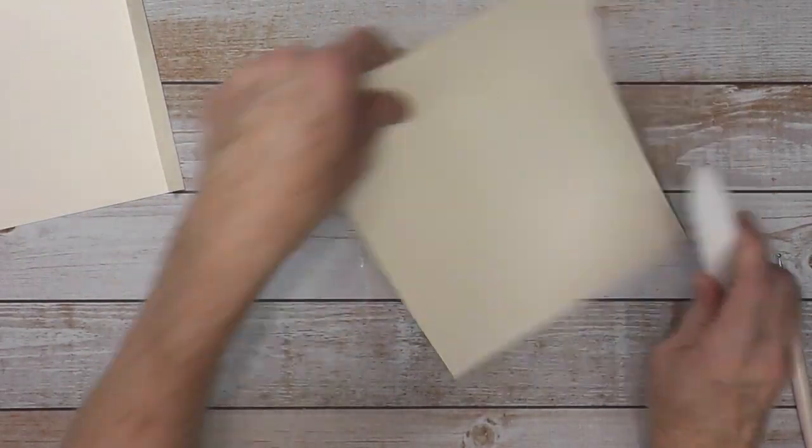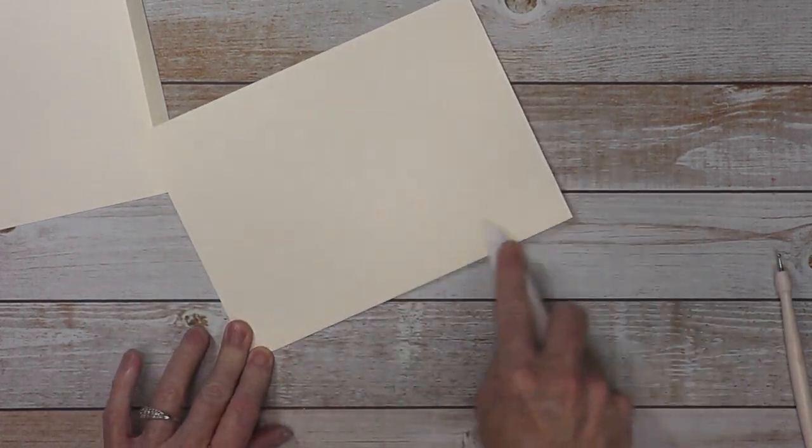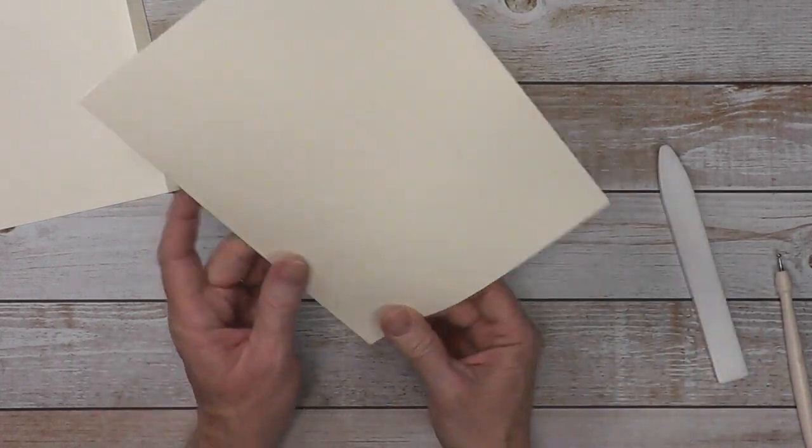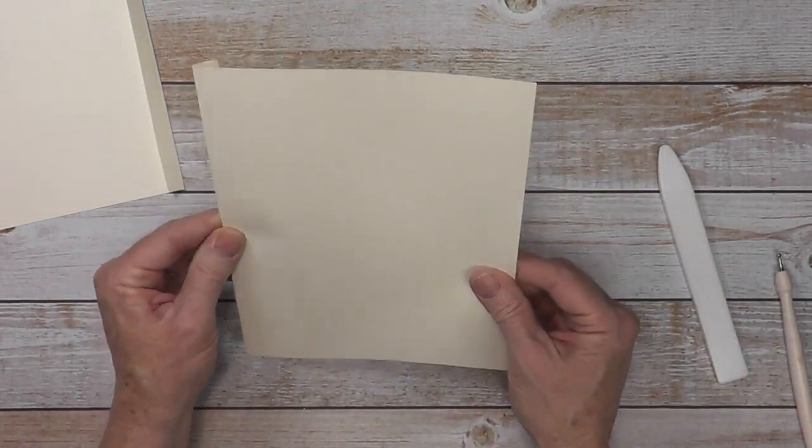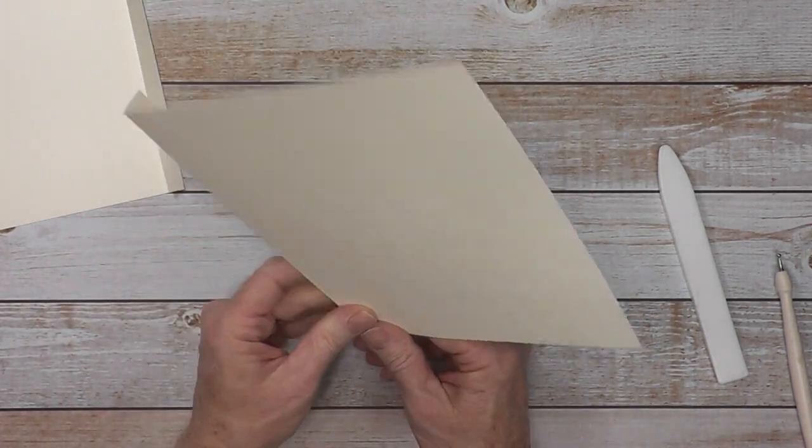Take your page and fold and burnish that half inch hinge. Now I use the Artisan cardstock, which is a very good quality linen cardstock, and I've never had any problems with making my hinges this way.